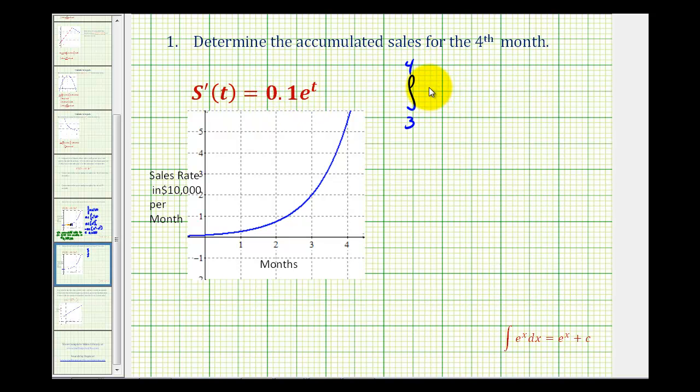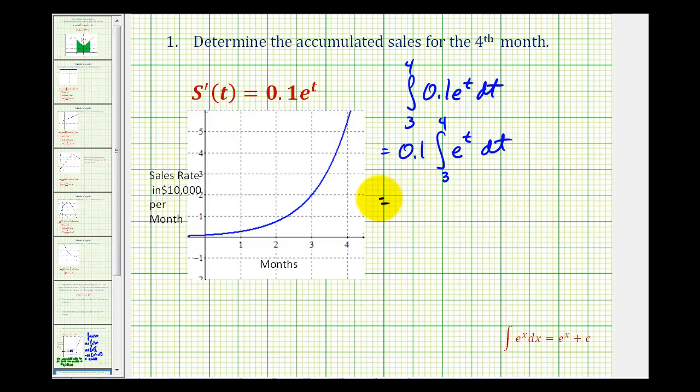And then, of course, the integrand will be the same. So now, it's just like the previous example, except our limits of integration are different. And the integrand of e to the t is e to the t.